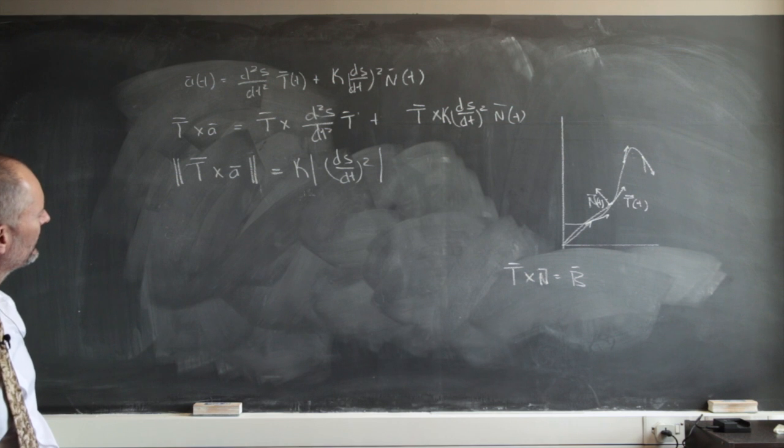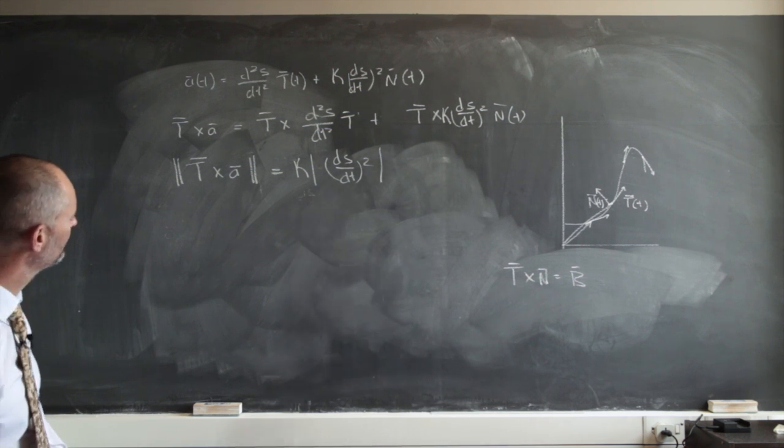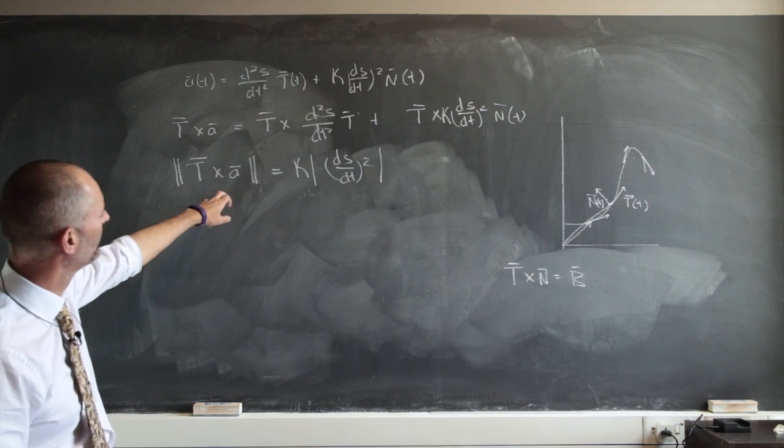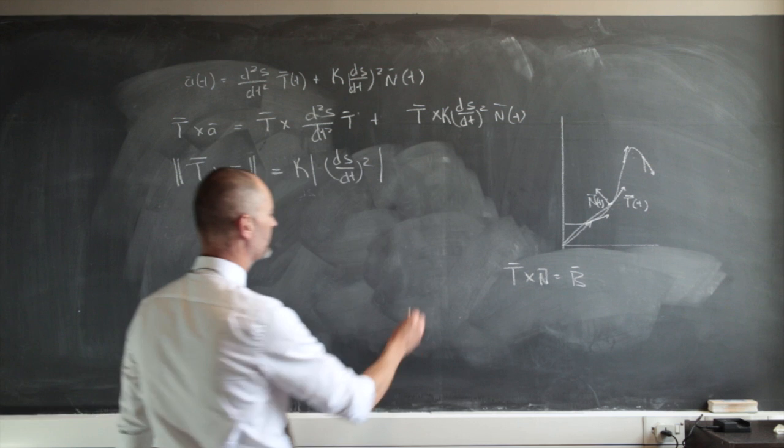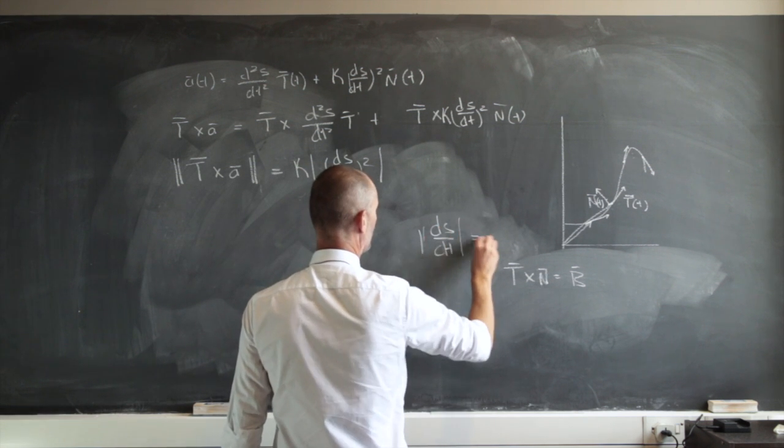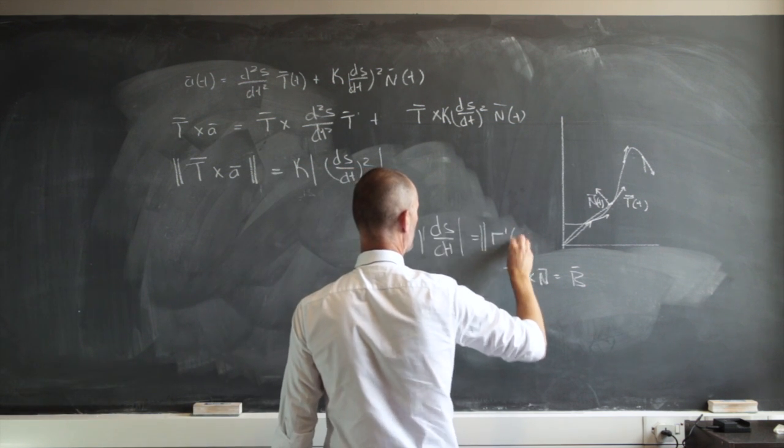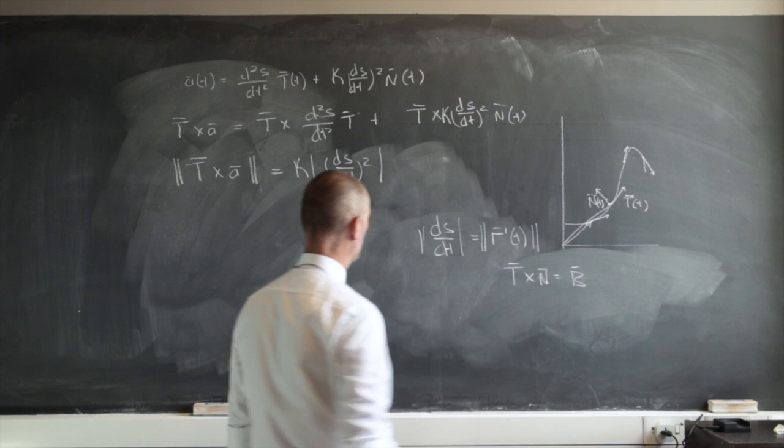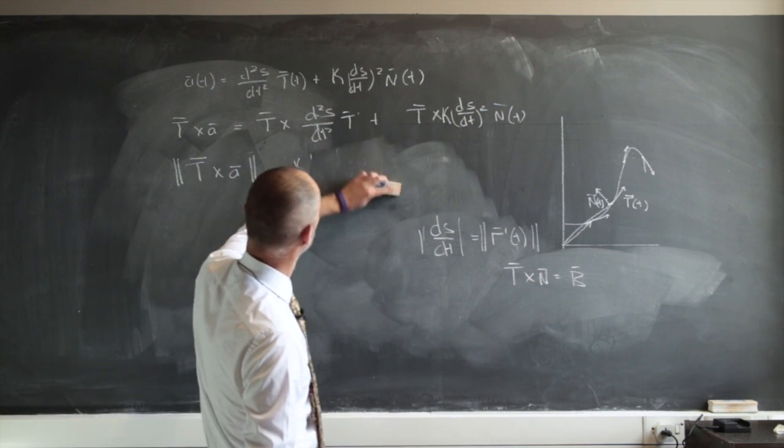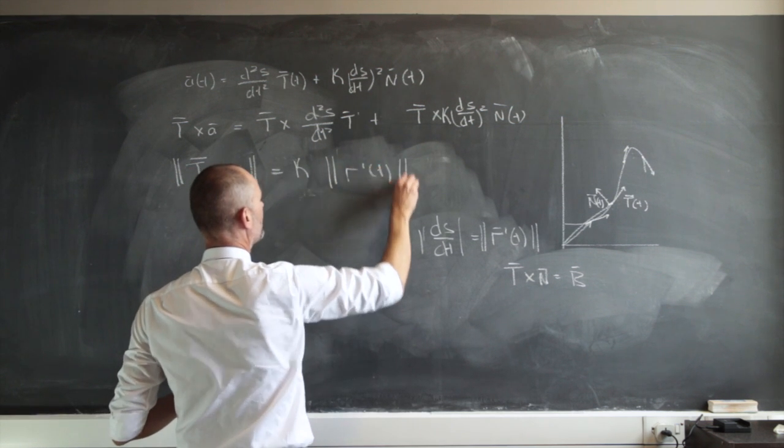Now we just have to remember a few things. What is T? Shall we do that one? What can we change? Let's play with ds/dt. Well ds/dt like that, that is just going to be the norm of r'(t). So we can put that in as square there. Let's put that in. We have this ||r'(t)||².